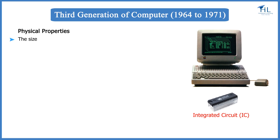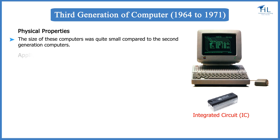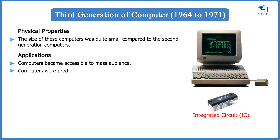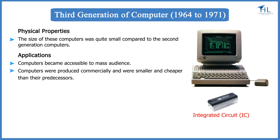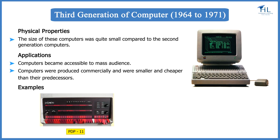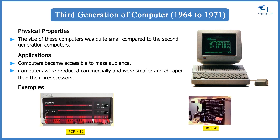The size of these computers was quite small compared to the second generation computers. Computers became accessible to mass audiences and were produced commercially, being smaller and cheaper than their predecessors. Examples of third generation computers are the PDP-11 and IBM 370.